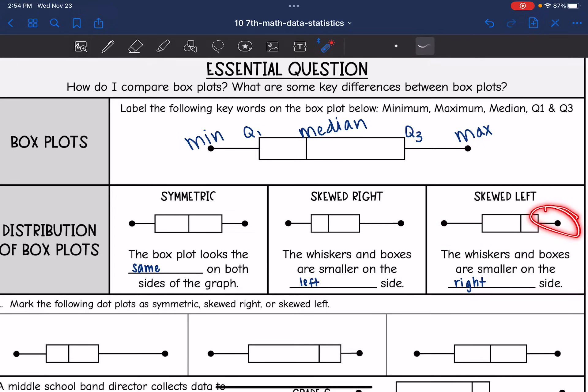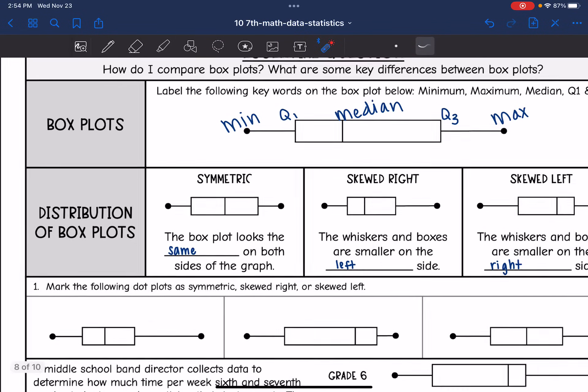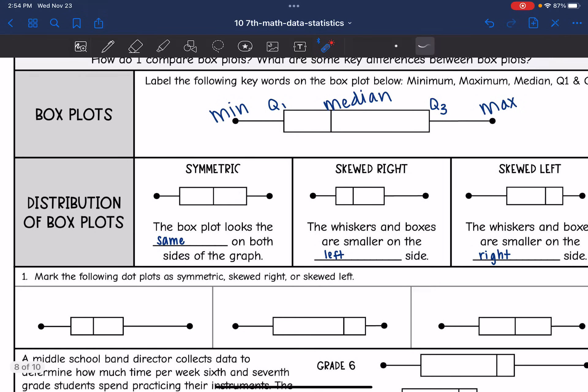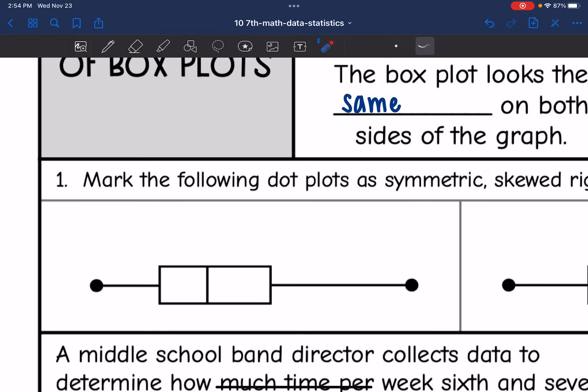So now we want to mark these three box plots as symmetric, skewed right, or skewed left. So this one has more on the right. So it is skewed right.